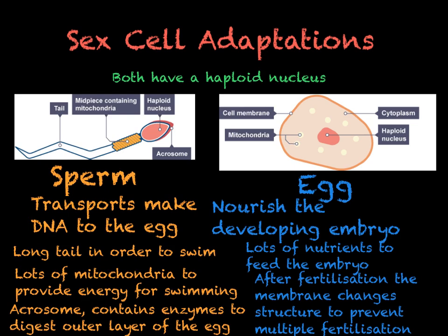the egg membrane changes its structure in order to stop any more sperm from getting in. This makes sure that the offspring only have the required amount of DNA. As with the sperm, it contains a haploid nucleus, which means it only has one copy of each chromosome. This means that when both of these cells fuse during fertilisation, the resulting cell has the correct number of chromosomes.